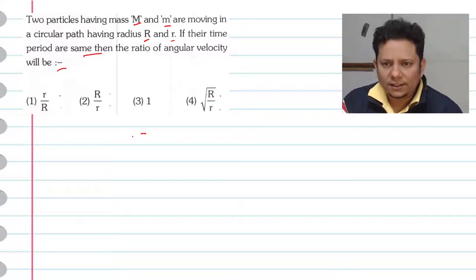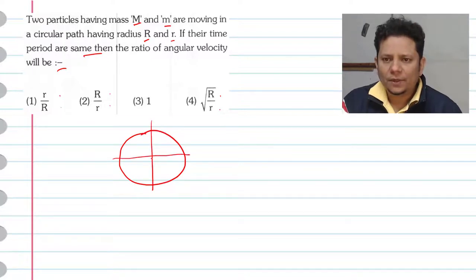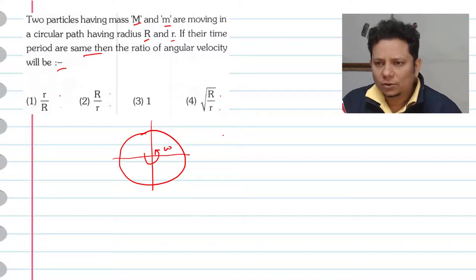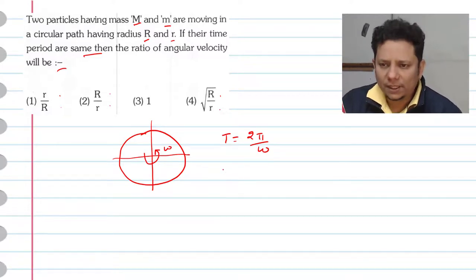Now, simple question. For any particle, if it's undergoing circular motion, let's say in this direction moving with omega, then the time period we write as 2π by omega. So time period is inversely proportional to omega.